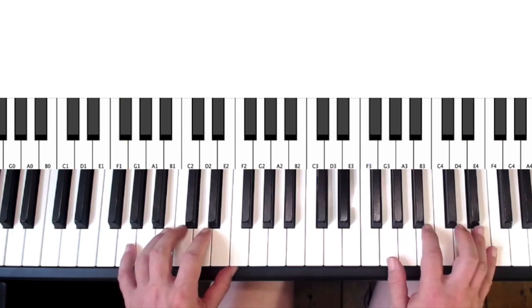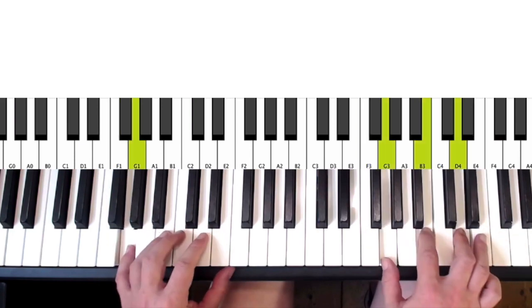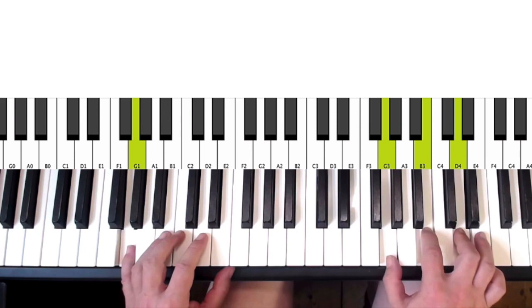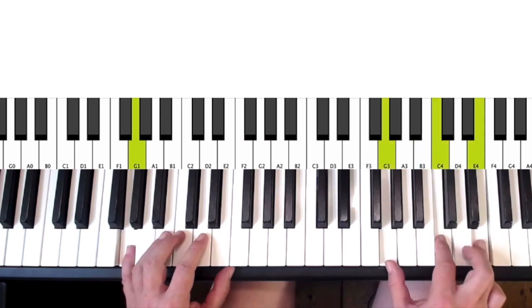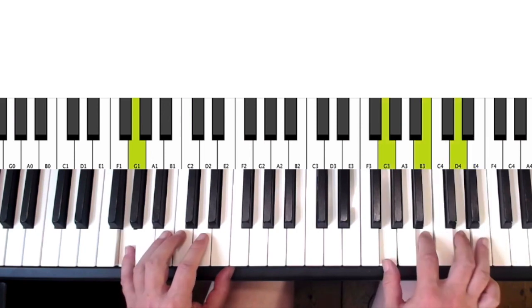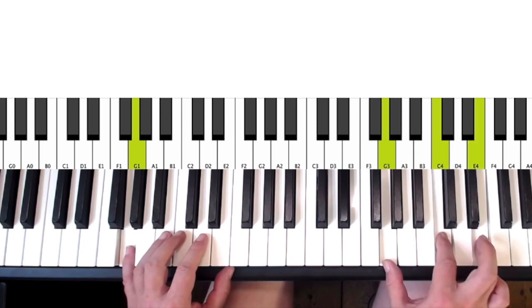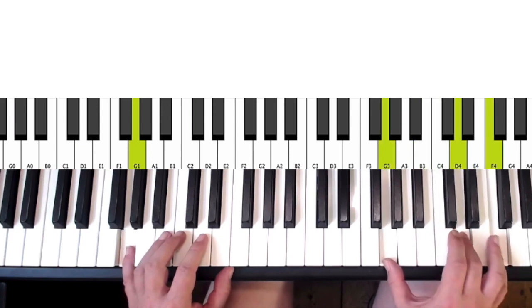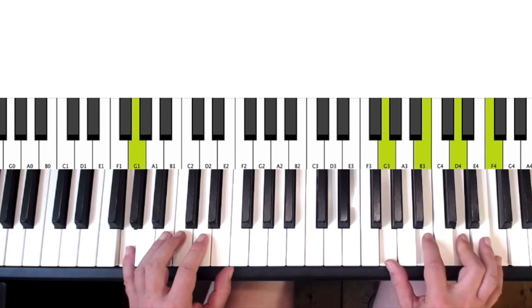And then on the dominant, we do the same. We have the G. We have quickly the same inversion of, so we have G, G7, quick inversion of C. And then the G7 without the major third here.